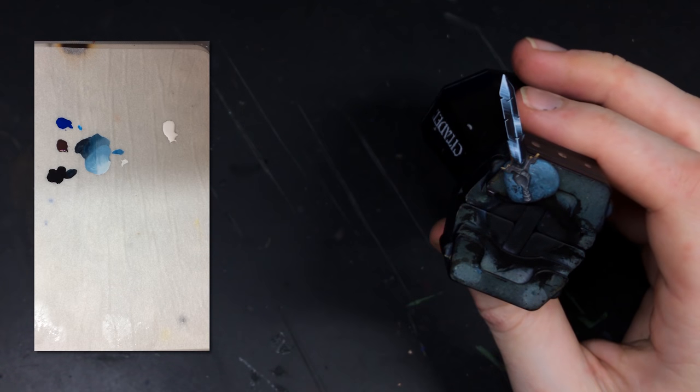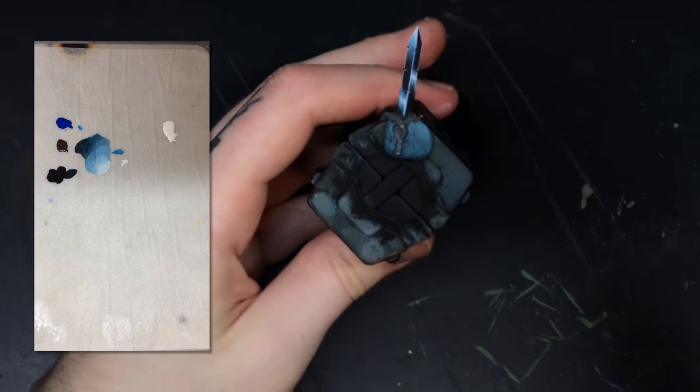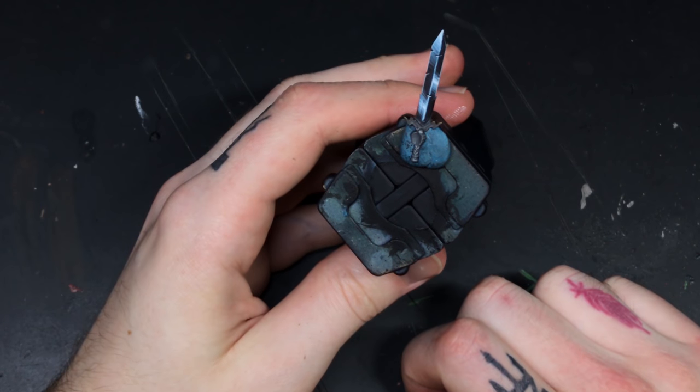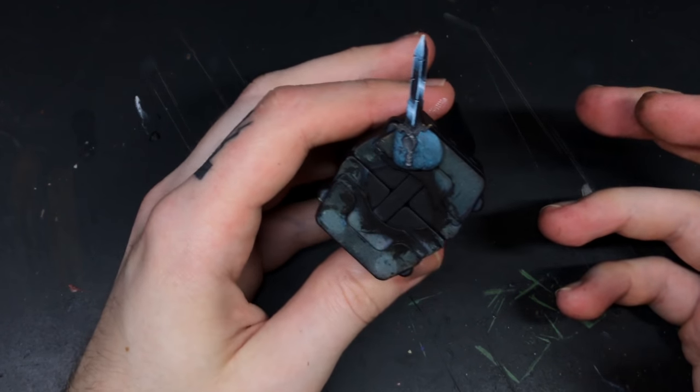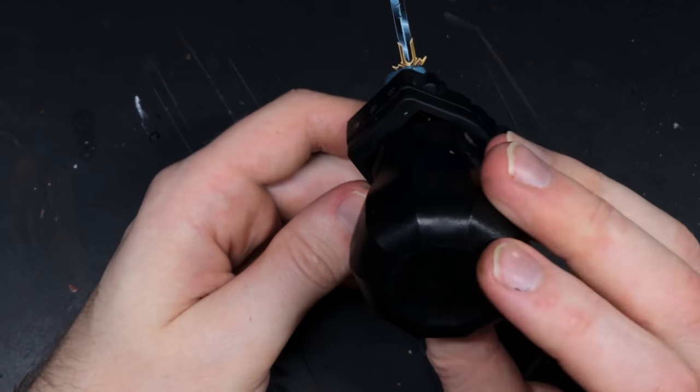This is the process of how I did the swords for my Stormcast Eternals. You can obviously use this technique for most weapons such as hammers and axes, just as I did. If it has a curve, move the reflections with the curve and adapt to each sword. You can also use other colors such as purple and green.